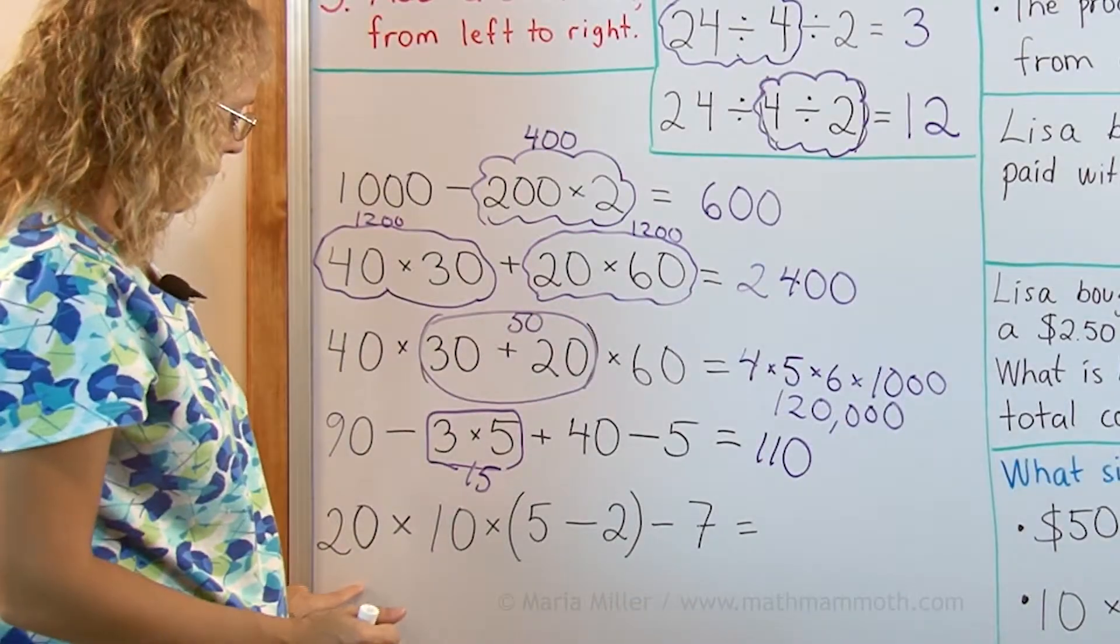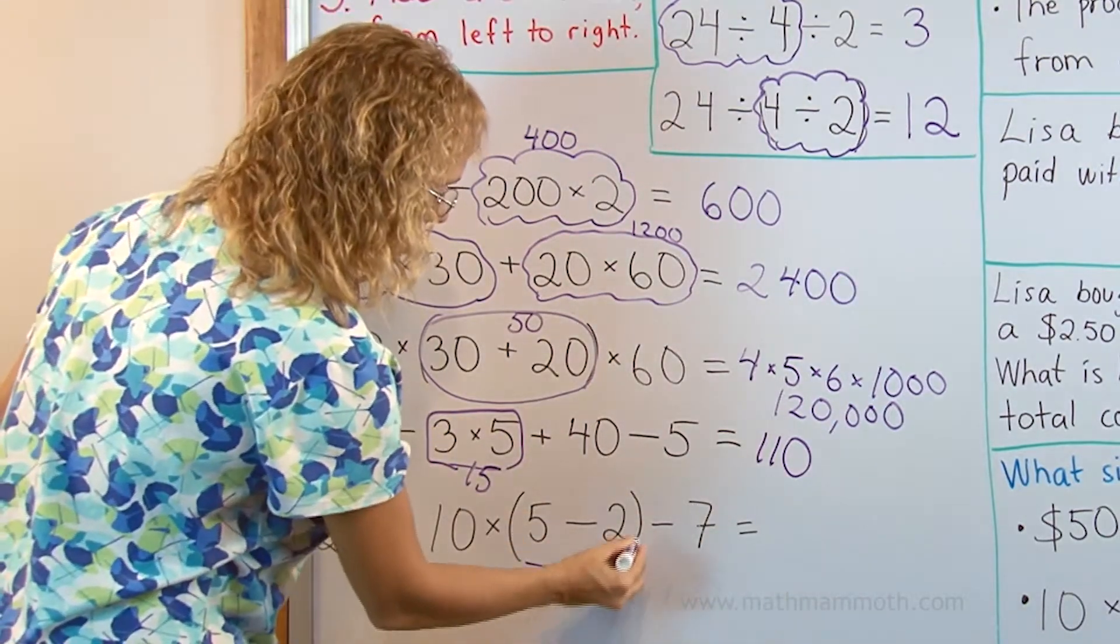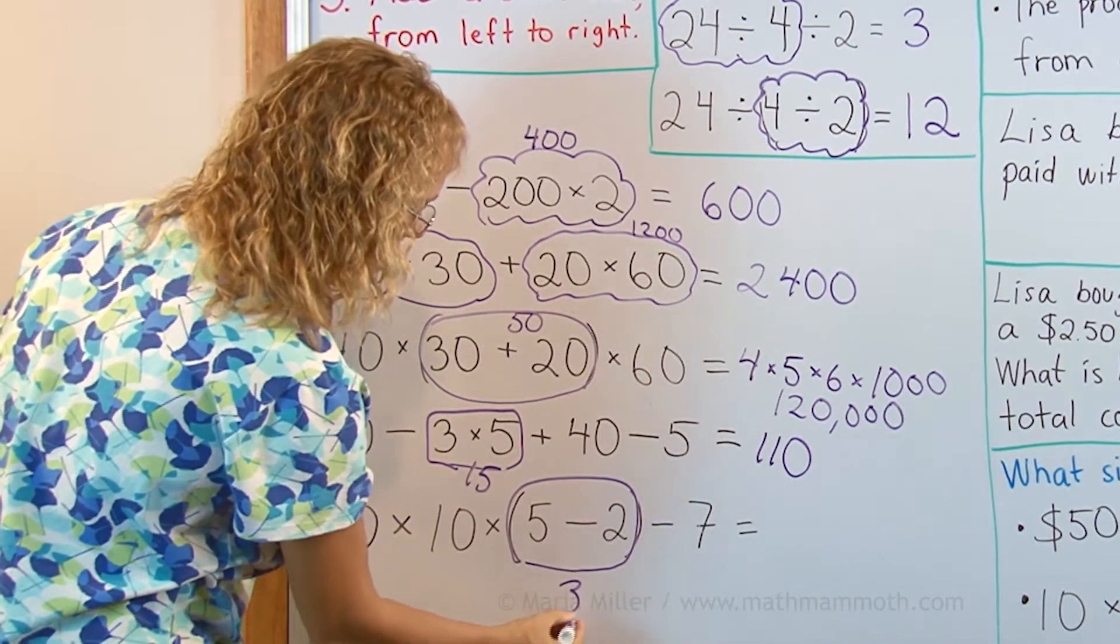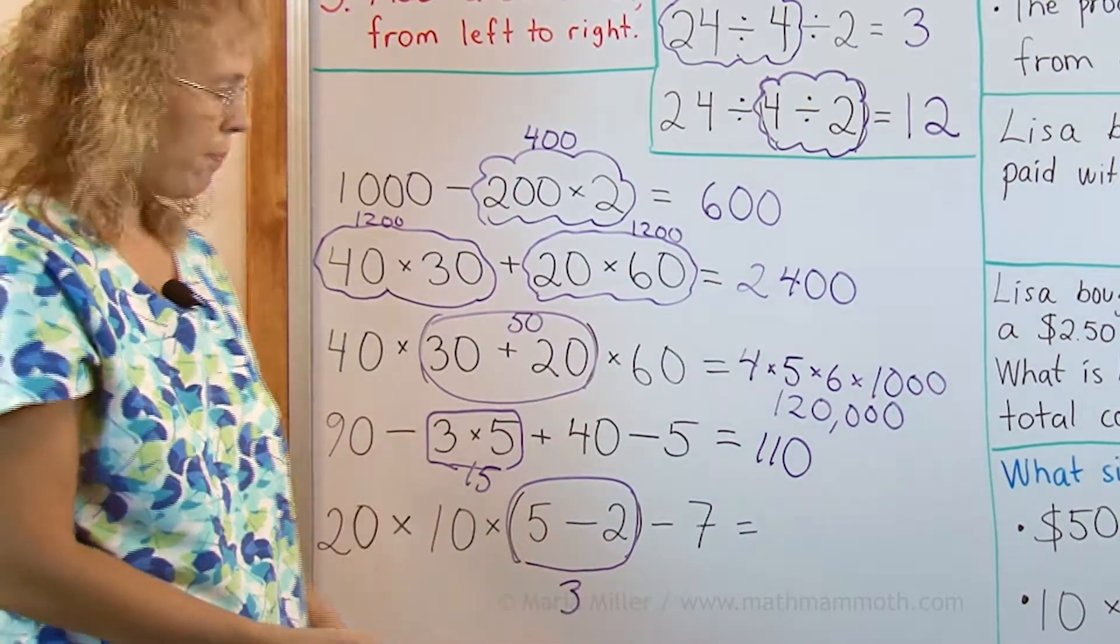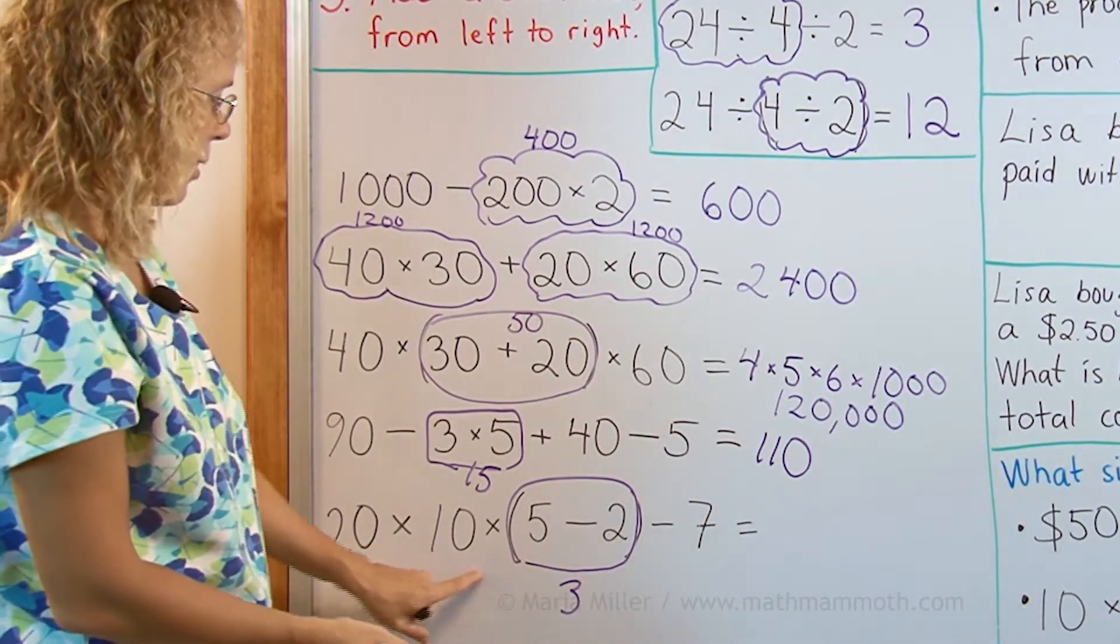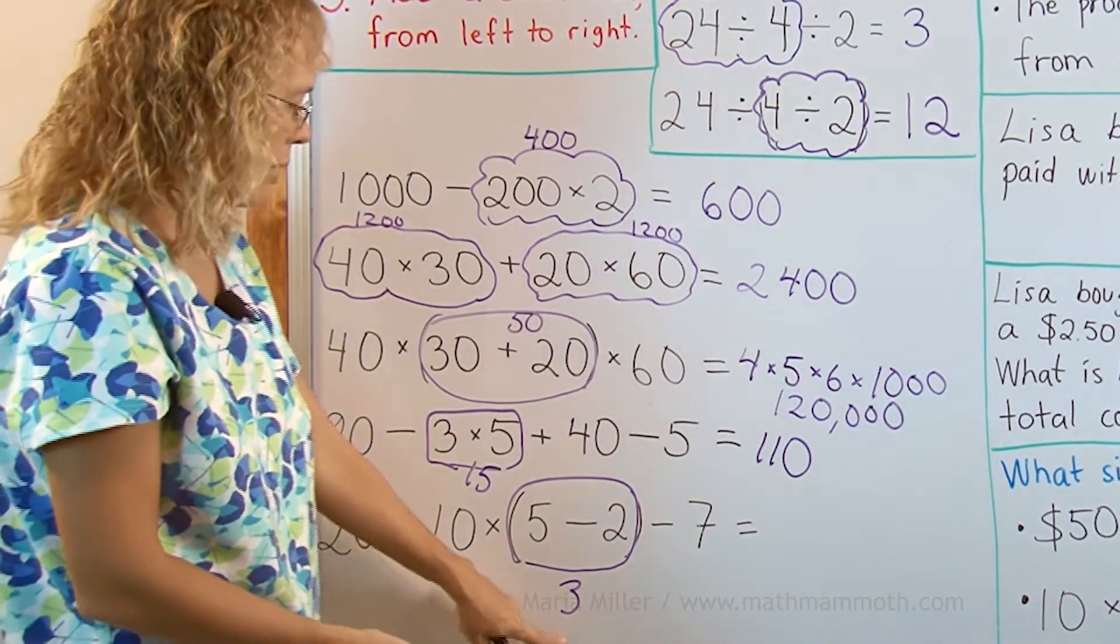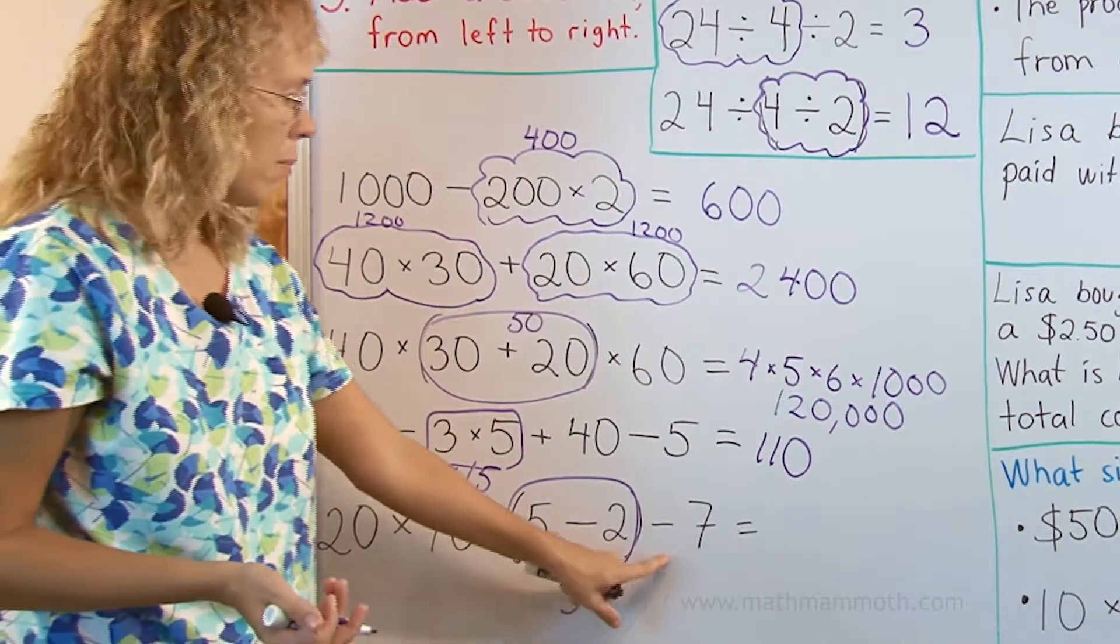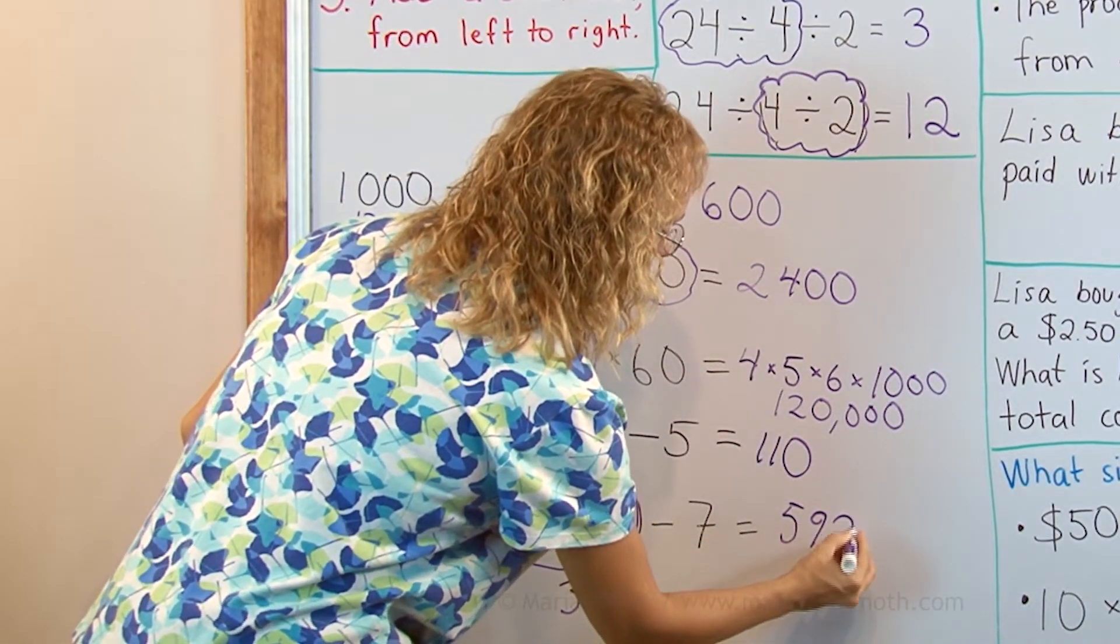And then 20 times 10 times 5 minus 2 minus 7. There's parenthesis, so this is done first, which is 3. And now the multiplication is next and subtraction last. So 20 times 10 times 3. This would be 200 here, times 3 is 600 minus 7. We would have 593 there.